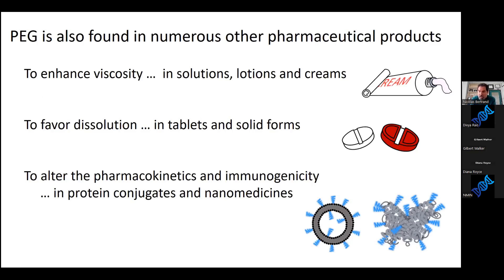When you use different medications from the pharmacy, you will also find PEG in various pharmaceutical products, including solutions, lotions, and creams that you put on your skin. You would also take it in tablets or solid oral dosage forms, because since the polymer is so soluble in water, it facilitates dissolution. And in nanomedicines, we like PEG for multiple reasons — it can be used to change the pharmacokinetics, the immunogenicity of some drugs, and in general, to change the pharmacology of different drugs.